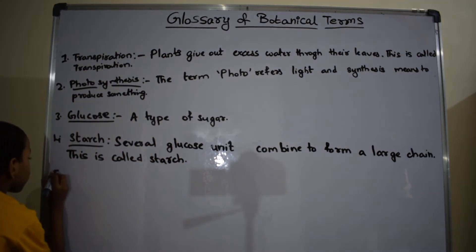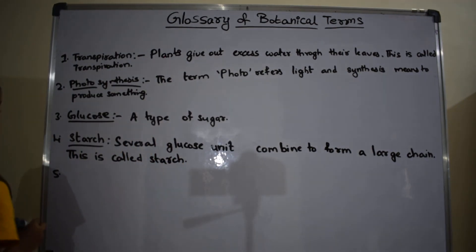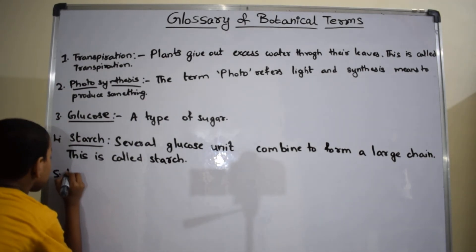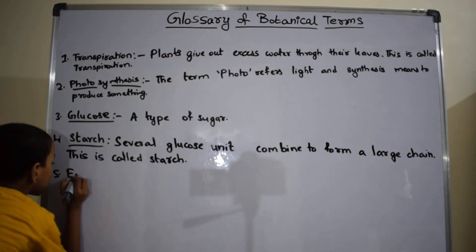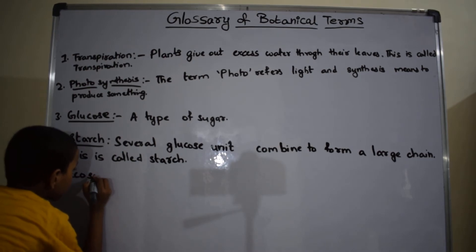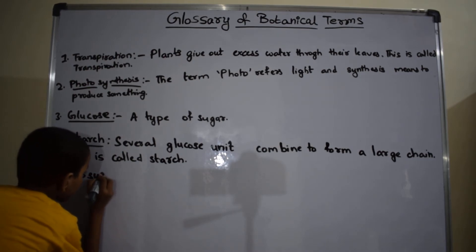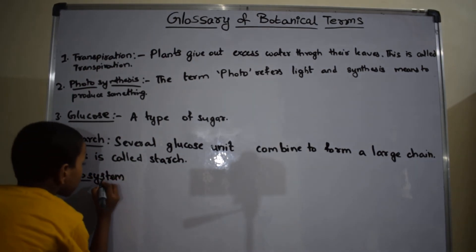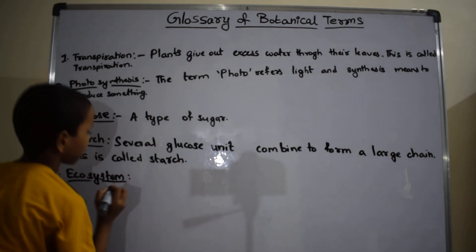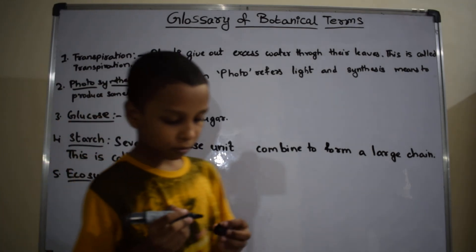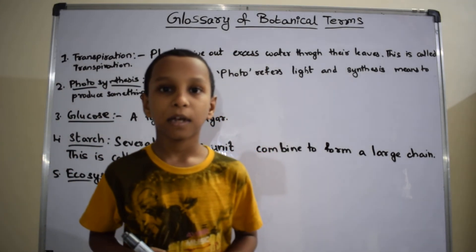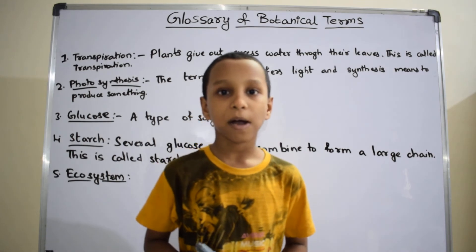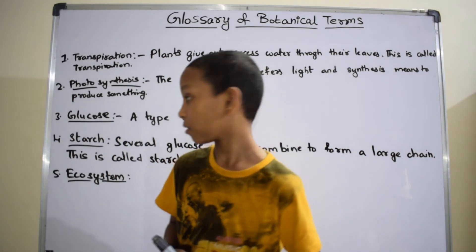The fifth one is ecosystem. An ecosystem consists of boundaries of plants, animals, water, and air.